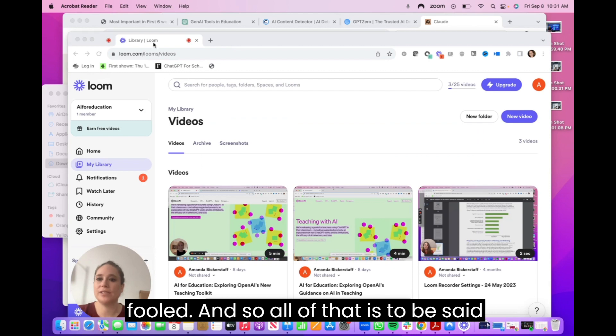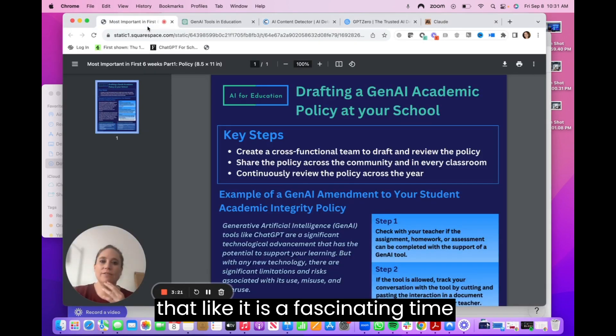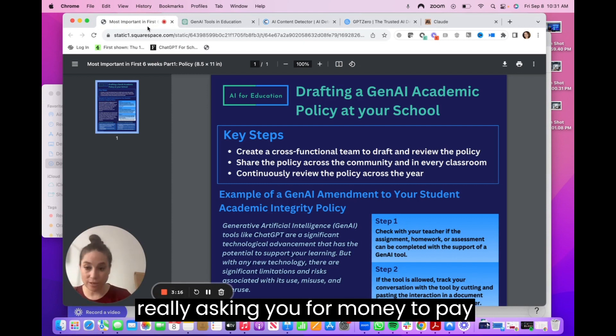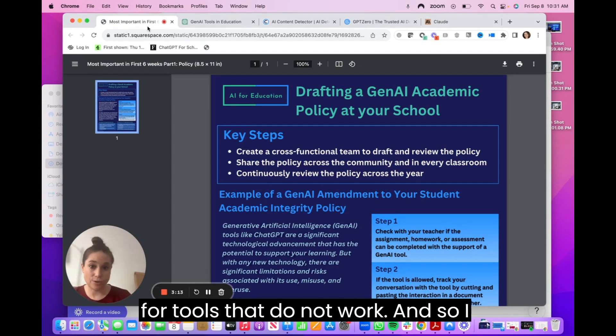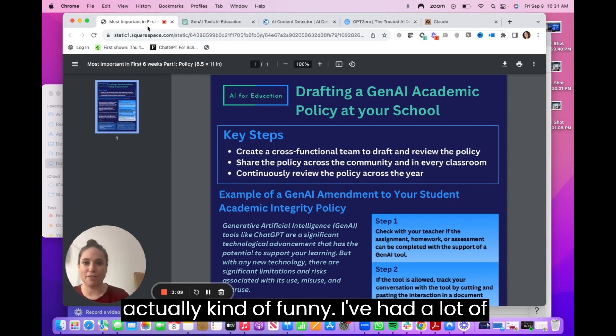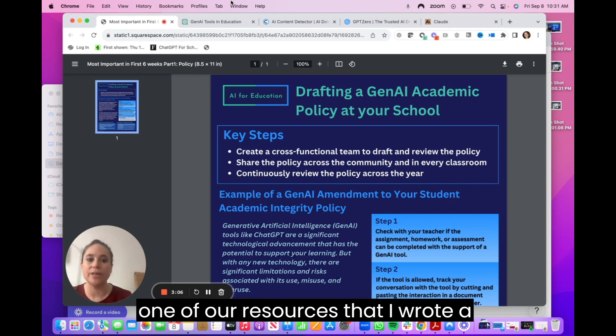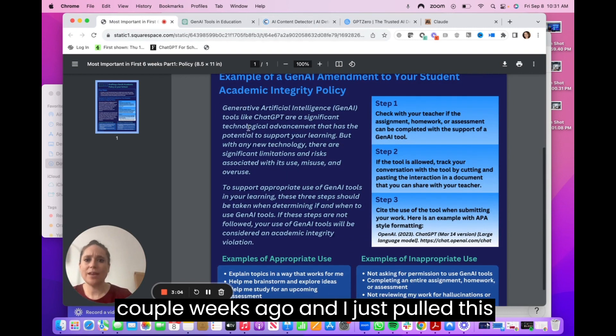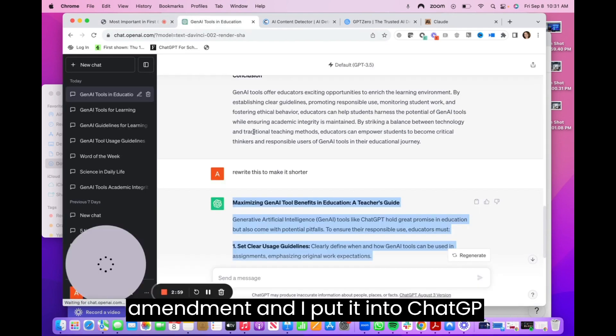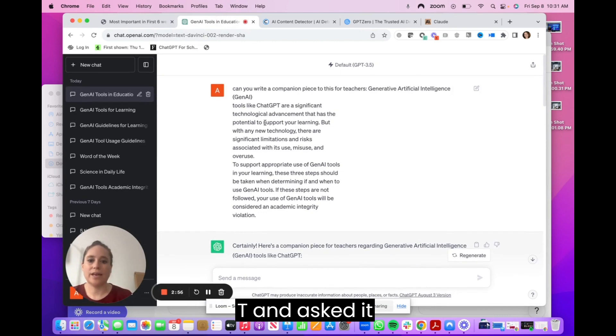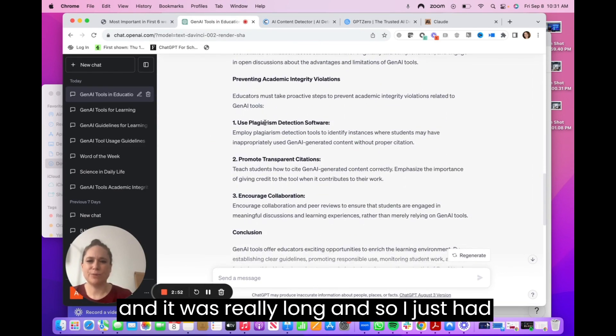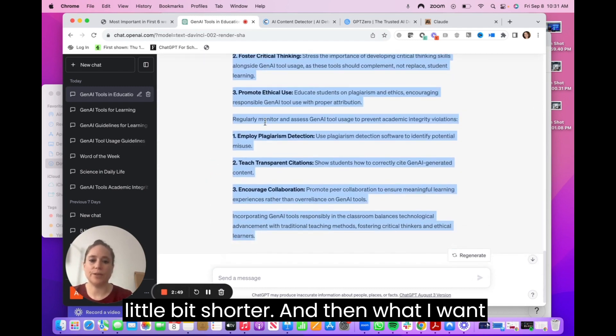And so all of that is to be said that it is a fascinating time where even companies are really asking you for money to pay for tools that do not work. And so I wanted to test it out on my own. It was actually kind of funny. I had a lot of fun this morning doing this. So this is one of our resources that I wrote a couple weeks ago. And I just pulled this section, which is around the student amendment. And I put it into ChatGPT and asked it to kind of rewrite it. And it was really long, and so I just had to rewrite it again just to make it a little bit shorter.